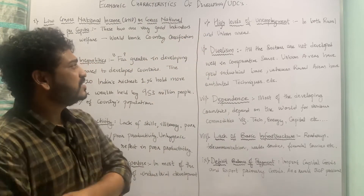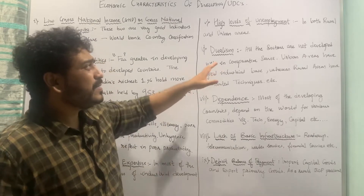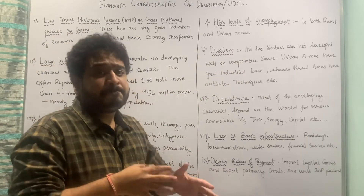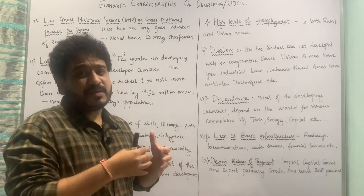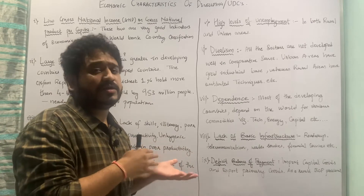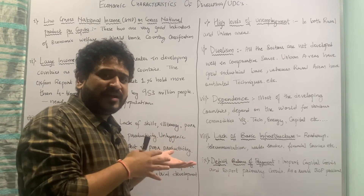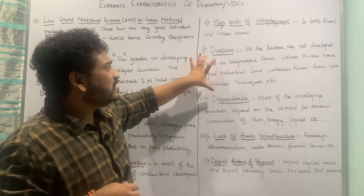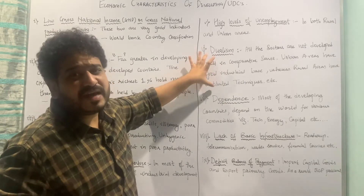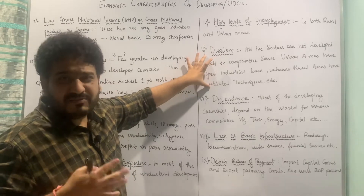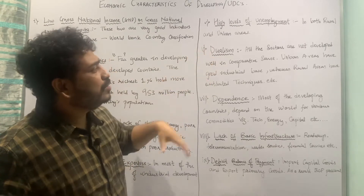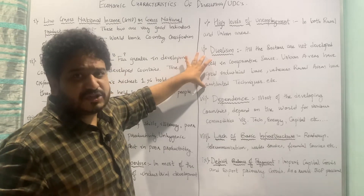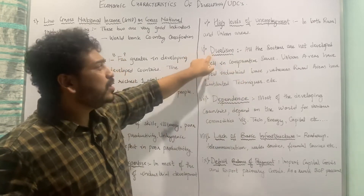Let us now move to the sixth important point, which is called dualism. Dualism means all the sectors are not well developed in a comparative sense — you will find the urban areas and urban sector pretty well developed compared to the rural areas. You will still find rural people using old, outdated technology versus urban ones using the latest technology. This is a problem and leads to rural-to-urban migration in most developing countries. There is a good book by Chinmay Tumbe, a professor at IIM Ahmedabad, called 'India Moving: The History of Migration in India,' which covers different aspects of migration.